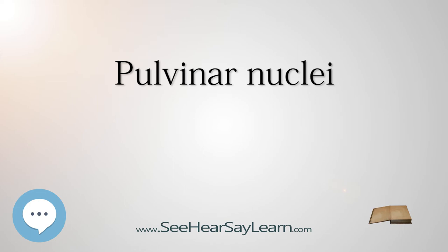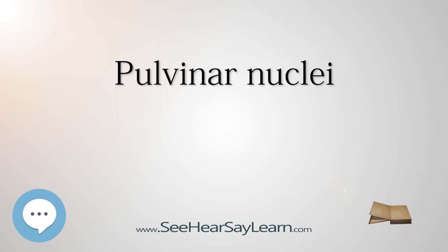Like the cervix uteri is usually just called the cervix, with which cervix being implicit, the pulvinar thalami (pulvinar of the thalamus) is usually just called the pulvinar, with which pulvinar being implicit. No other anatomic structure in today's terminologia anatomica is called a pulvinar, although in older terminology a part of the glomus body was called the pulvinar tunicae internei segmenti arterialis anastomosis arteriovenosi glomeriformis. Each pulvinar nucleus (nucleus pulvinaris) has its own set of cortical connections.